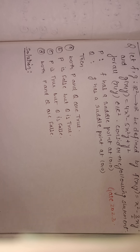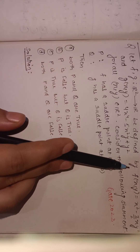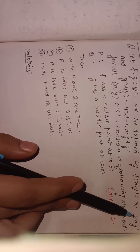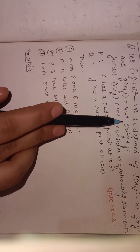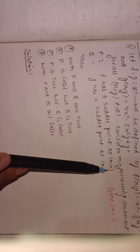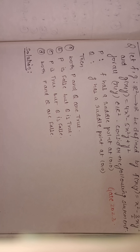Hello students, welcome to our channel Higher Mathematics. In this video lecture I am going to discuss a previous year question of real analysis asked in GATE 2023. Our question is: let f and g from R to R be defined by f(x,y) = x² - (3/2)xy² and g(x,y) = 4x⁴ - 5x²y + y² for all (x,y) in R². Consider the following statements: P — f has a saddle point at (0,0), and Q — g has a saddle point at (0,0).